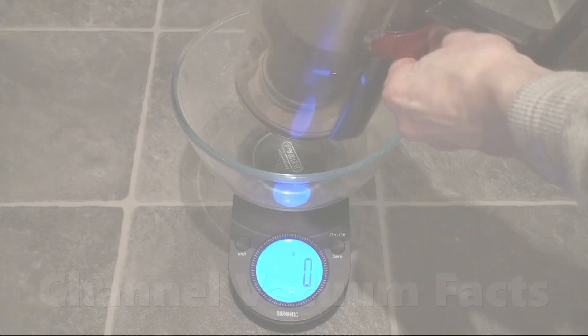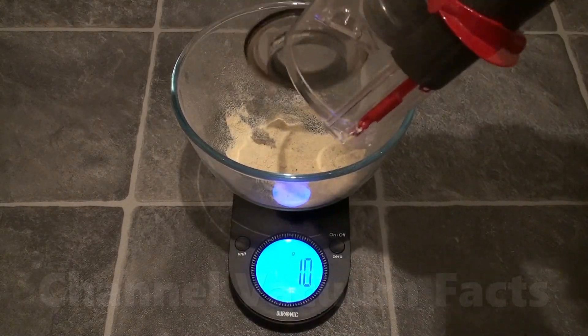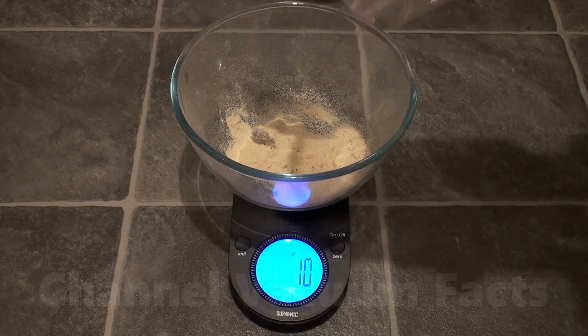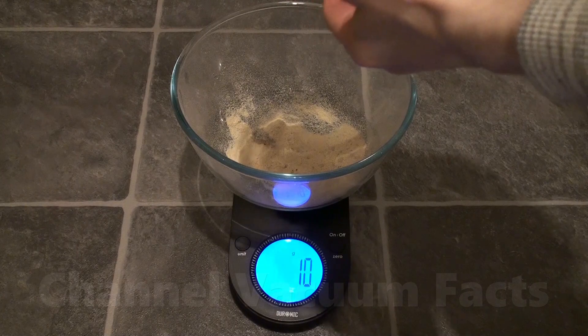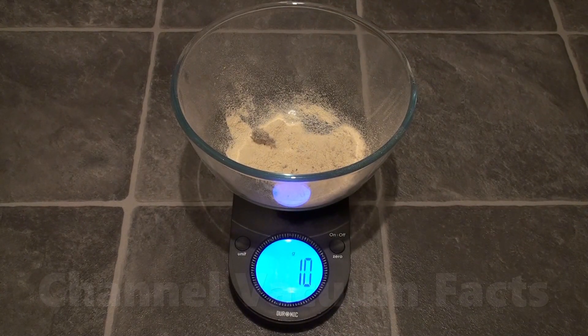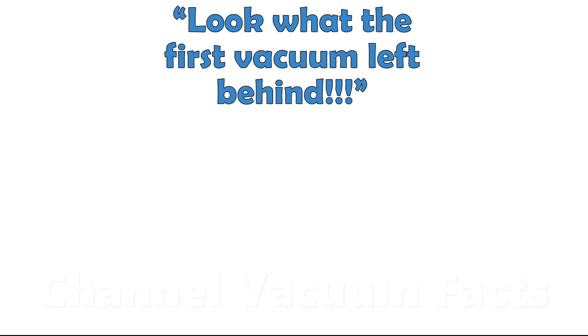I re-vacuumed the whole area again using only mode 1 and managed to extract 10 grams. This is the point where people who don't understand the statistical nature of particle removal from carpets claim that the second vacuum is better than the first because, look what the first left behind! Except they're both the same vacuum here, which shows just how misunderstood the claim is.